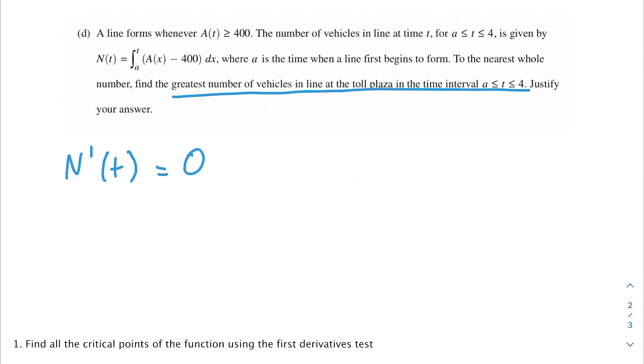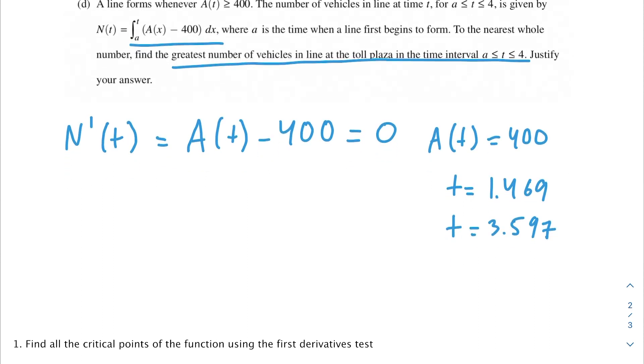What is the derivative of N prime of t? It would be the derivative of this. We can just get rid of that integral, so we get A(t) minus 400. We're setting that equal to 0. If we add 400 to the other side, we get A(t) equals 400. We use our calculator to determine when that happens, and that will be at t equals 1.469, and then also when t equals 3.597. So we have these two times at which the derivative is equal to 0.